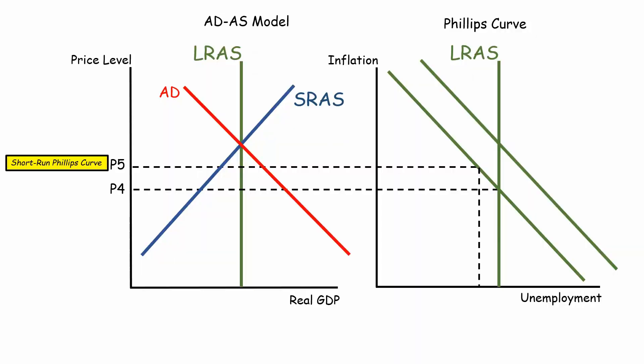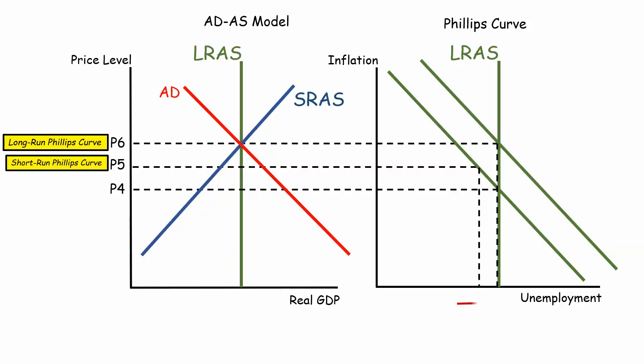So, in the long run, prices will go up further, and the unemployment rate goes up. This is totally detached from what the Phillips Curve represents.